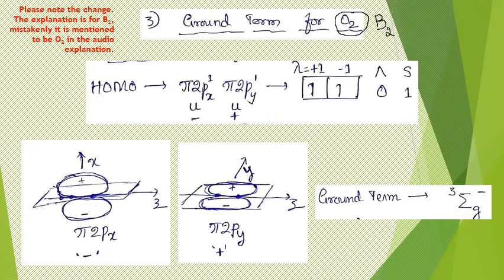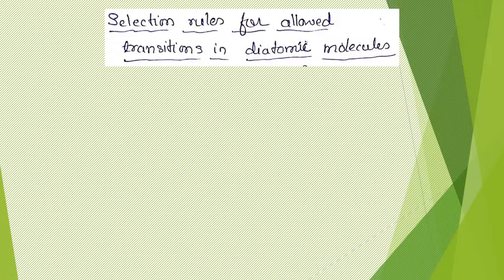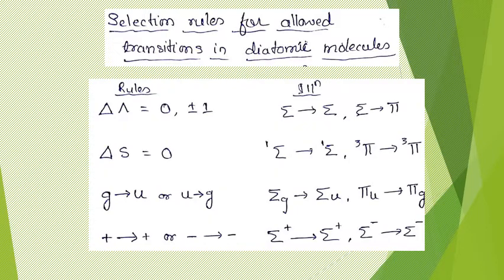For practice, you can generate related species from O₂: O₂⁺, O₂⁻ (superoxide ion), and O₂²⁻ (peroxide ion), and try writing their term symbols. I recommend trying all of these.